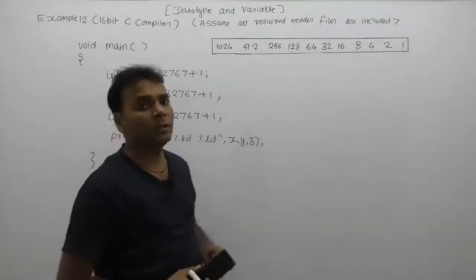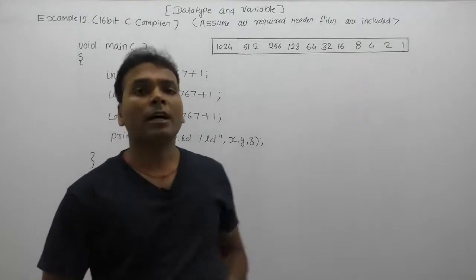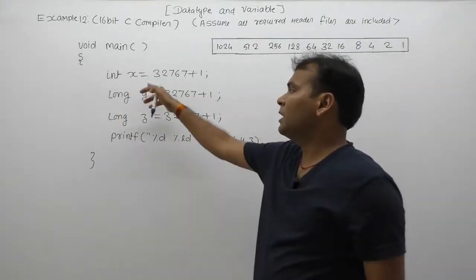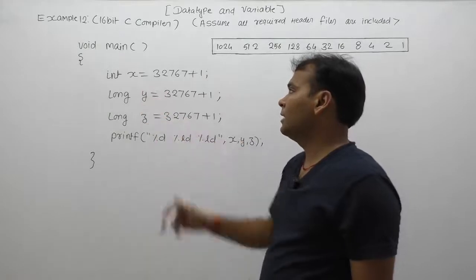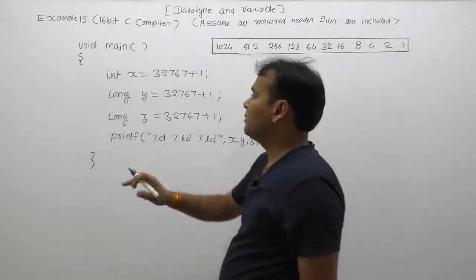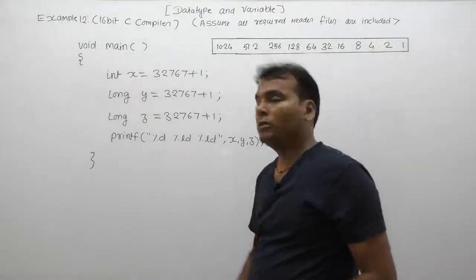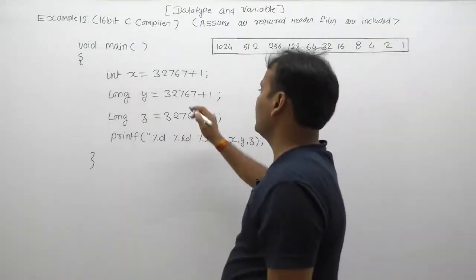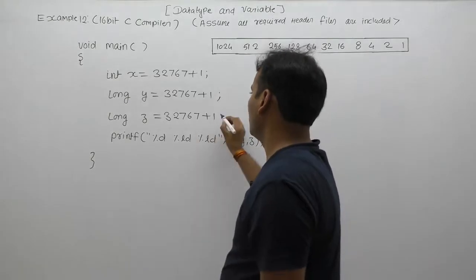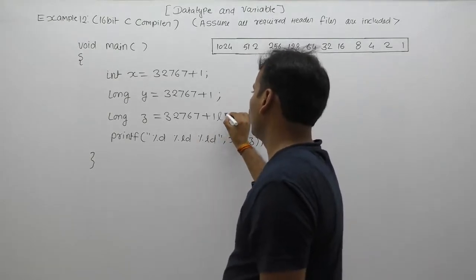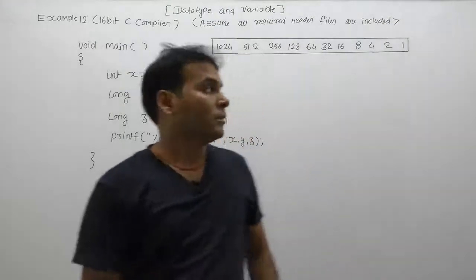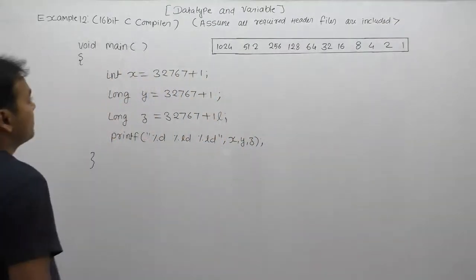Now let's see the next example regarding integer and long data types. We are declaring three variables x, y, and z. The first one, x, is an integer type, while y and z are long types. We are assigning values in different flavors — here we are using the suffix 'l' which means long.